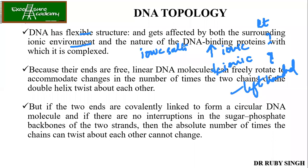The nature of the DNA binding proteins with which DNA is complexed also matters. Depending on the proteins or enzymes that interact with DNA, the structure of DNA gets twisted, relaxed, folded, or forms loop-like structures. Depending on the ionic environment and DNA binding proteins, the DNA structures can be turned around. Because the ends are free, linear DNA molecules can freely rotate to accommodate changes in the number of times the two chains of the double helix twist about each other.